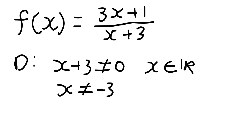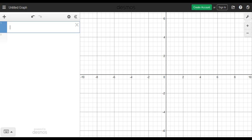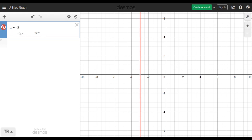From our knowledge of reciprocal functions, this gives us a vertical asymptote at x = -3. I'm going to go ahead and plot that — our function is not going to ever reach this line.